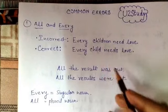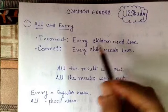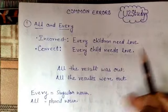Child is singular, and as it is a singular noun, it will take the singular form of the verb, which is needs. So every child needs love is the correct form.